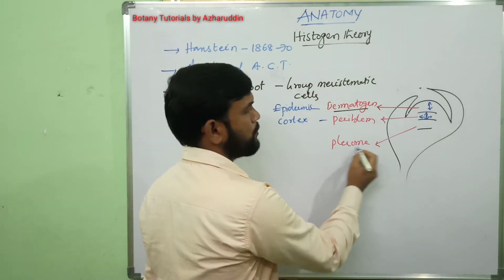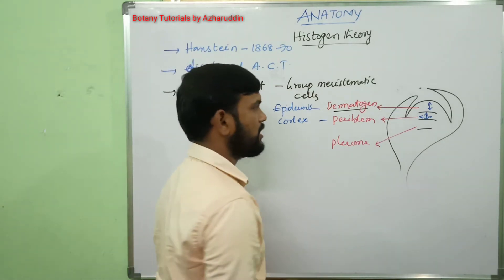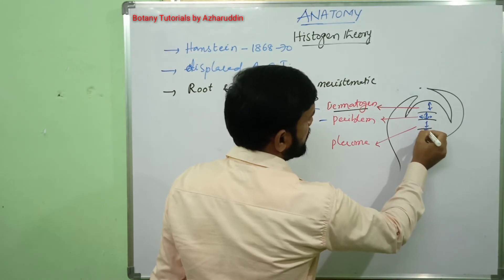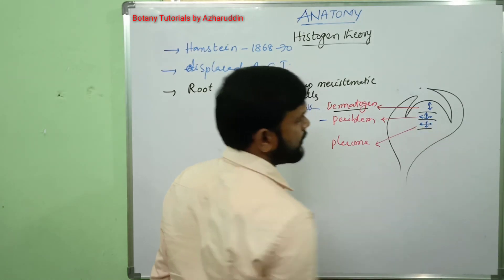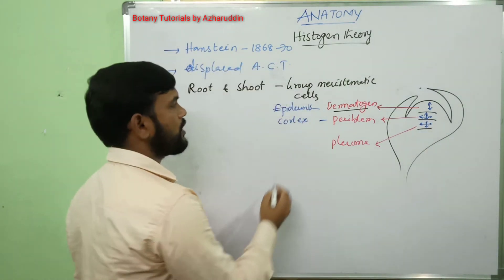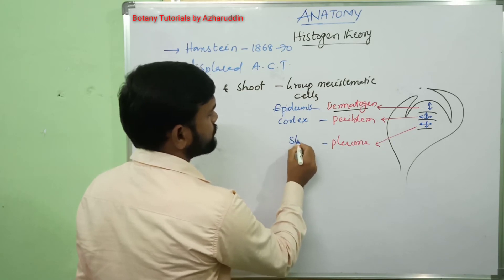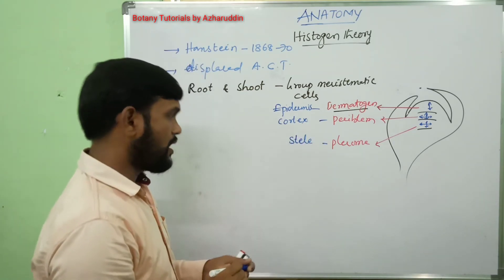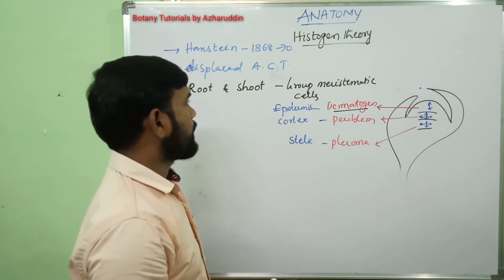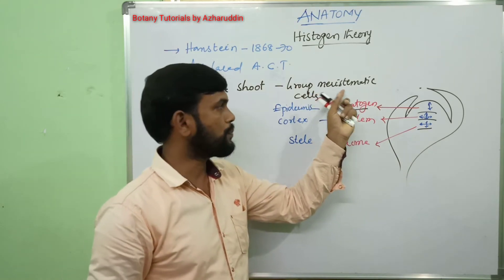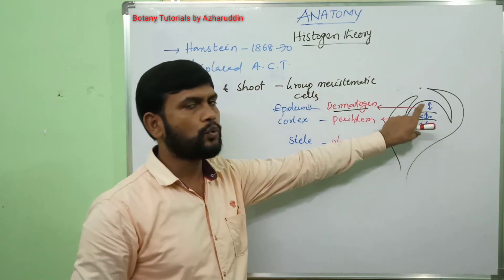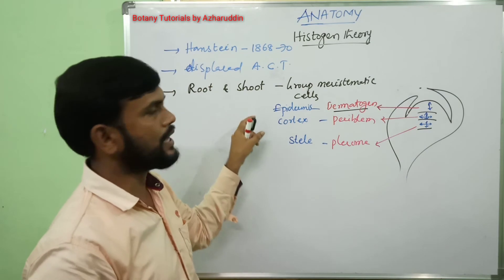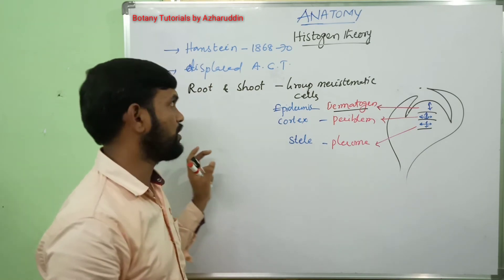The third zone is plerome, in which cells divide both anticlinally and periclinally to form stele. In this way, the meristematic tissue present in the root apex and shoot apex forms different types of tissues in the plant body.